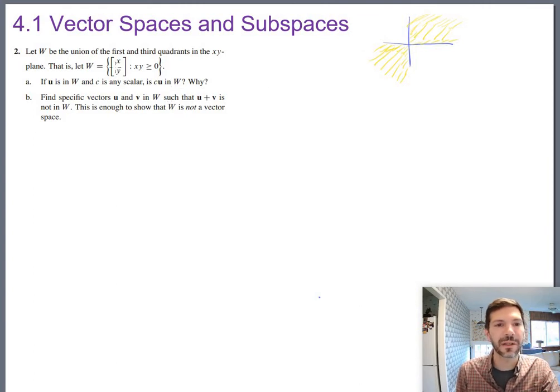Okay, so this is certainly elements out of a known vector space, by the way. These are R² elements. So if u is in W, so if it's from the first or third quadrant, and c is any scalar, is cu in W? Why?